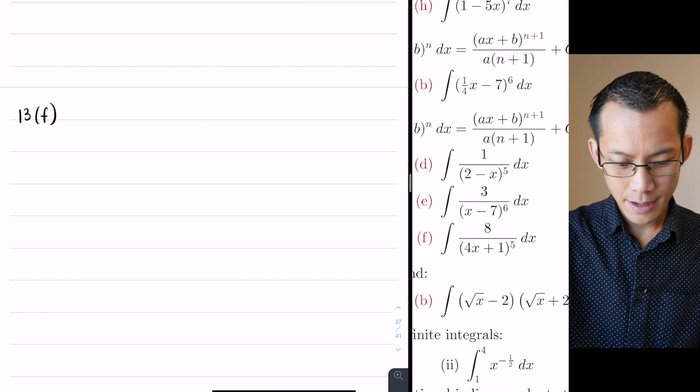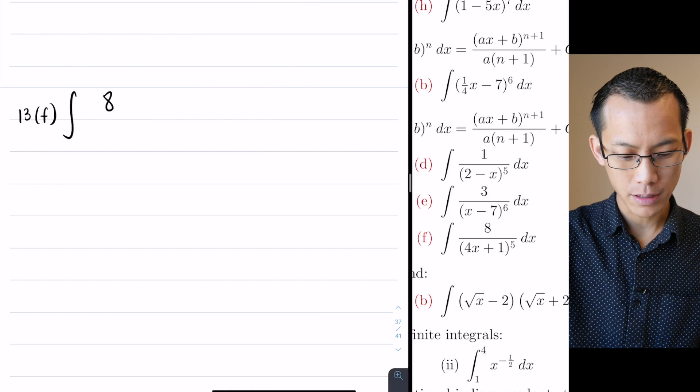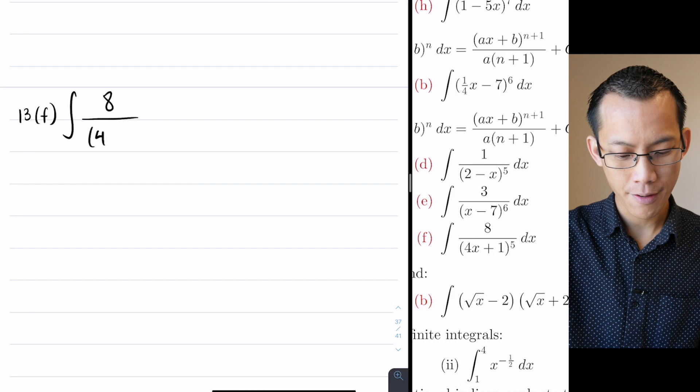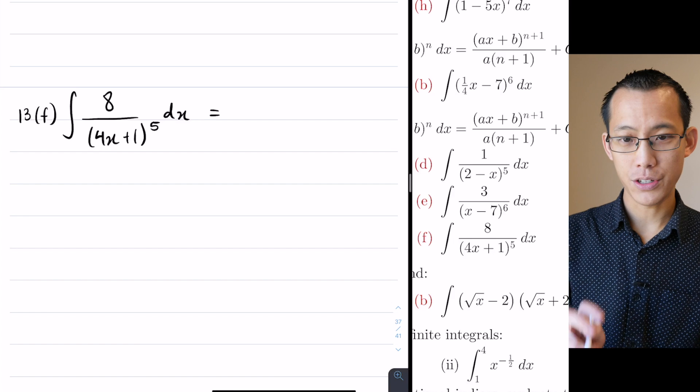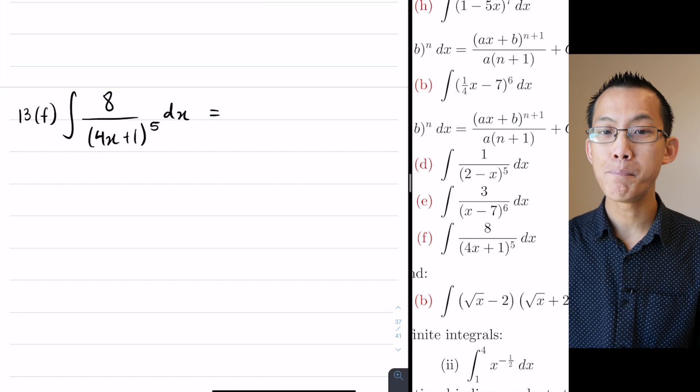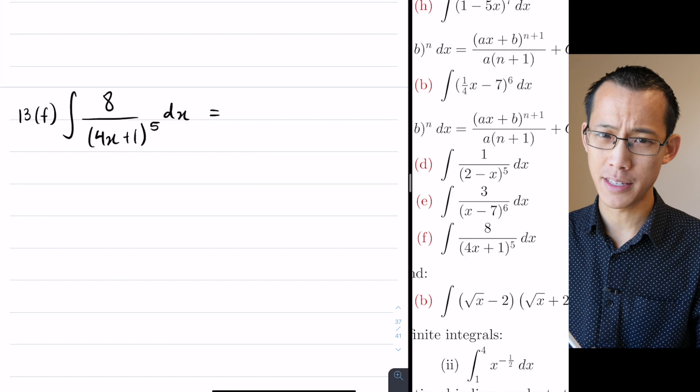It says there I'm going to integrate 8/(4x + 1)⁵ with respect to x. Okay, so here's the way I'm going to approach this. There are two key things that I'm going to do before I integrate to set it up for integration.